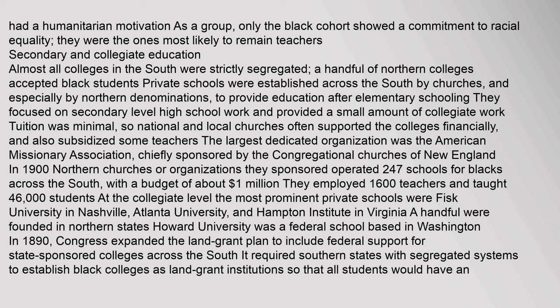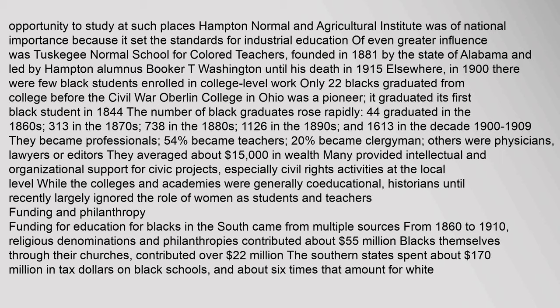The most prominent private schools were Fisk University in Nashville, Atlanta University, and Hampton Institute in Virginia. Howard University was a federal school based in Washington. In 1890, Congress expanded the land-grant plan to include federal support for state-sponsored colleges across the South, requiring southern states with segregated systems to establish black colleges as land-grant institutions. Hampton Normal and Agricultural Institute set the standards for industrial education. Of even greater influence was Tuskegee Normal School for Colored Teachers, founded in 1881 by the state of Alabama and led by Booker T. Washington until his death in 1915.